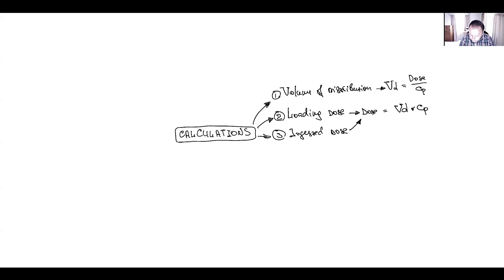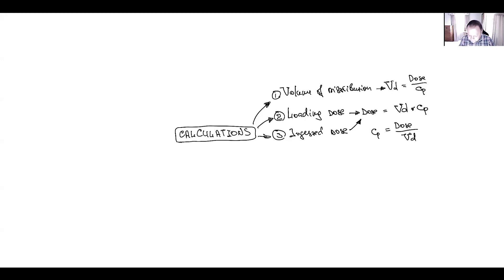The third value we can extract from this equation is plasma concentration. In this situation, plasma concentration = Dose / Volume of Distribution. So these are the three types of questions you may have from this foundational equation.